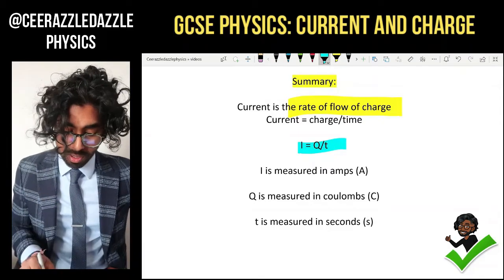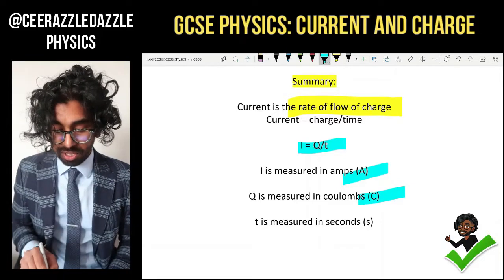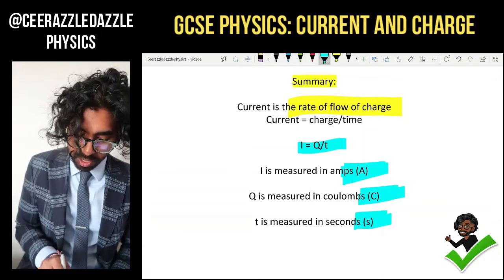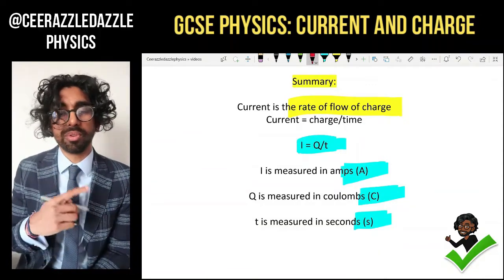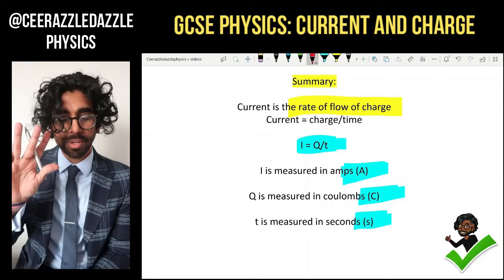Current is measured in amps. Charge is measured in coulombs. And time is measured in seconds. And that's it. That's it for today's learning. Let me jazz it up a bit. Here we go. Make sure you've got this right because we need this information for next lesson. All right. And that's it for today. Ciao ciao. Goodbye.